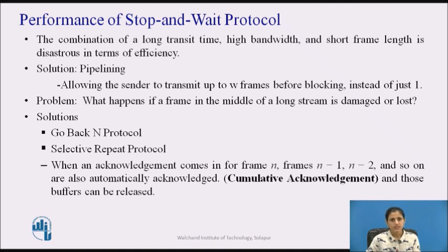Pipelining frames over an unreliable communication channel raises some serious issues. What happens if a frame in the middle of a long stream is damaged or lost? Large numbers of succeeding frames will arrive at the receiver before the sender finds out that anything is wrong. When a damaged frame arrives, it should be discarded, but what should the receiver do with all the correct frames following it? The receiving data link layer is required to deliver packets to the network layer in sequence. Two basic approaches for dealing with errors in pipelining are go-back-N and selective repeat.